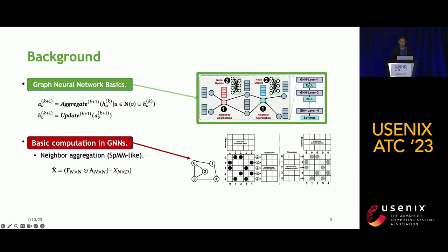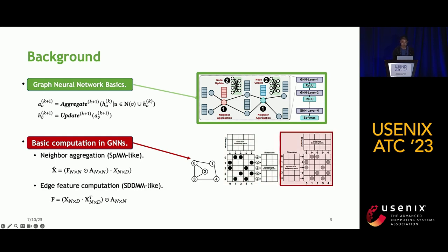The basic operators used by GNN include: first, neighbor aggregation, which follows sparse matrix and dense matrix multiplication called SPMM. The sparse adjacency matrix of a graph is multiplied with the dense embedding matrix for neighbor aggregation. The second computation is node feature computation, which follows sampled dense-dense matrix multiplication, where the node embedding matrix and its transposed version are first multiplied together.